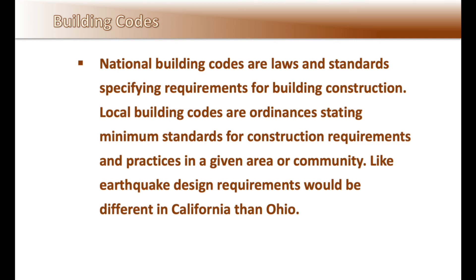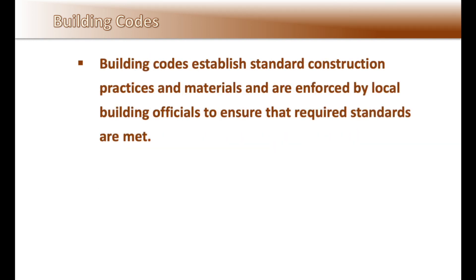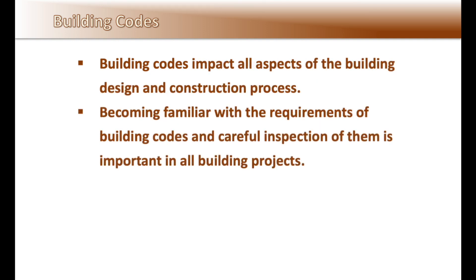Let's talk briefly about building codes. National building codes are laws and standards specifying requirements for building construction, while local building codes are ordinances stating minimum standards for construction requirements and practices in a given area or community. For example, earthquake design requirements would be different in California than in Ohio, or the depth of footings would be different in Alaska than in Florida. Building codes establish standard construction practices and materials and are enforced by local building officials to ensure that required standards are met. Building codes impact all aspects of the building design and construction process.